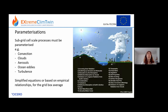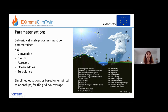I'll say something about parameterisation. Because climate model grids are pretty big — generally say 100 kilometres — and some processes happen on scales which are smaller than that, say convection or clouds (maybe a few kilometres), aerosols are really tiny, and ocean eddies and turbulence are also quite small scale. We can't represent these explicitly in the climate model, so we have to parameterise them, which means we have simplified equations to represent the average effects for the grid box. Sometimes we might not totally understand a process, so we have to approximate based on empirical — that is, observed — relationships.